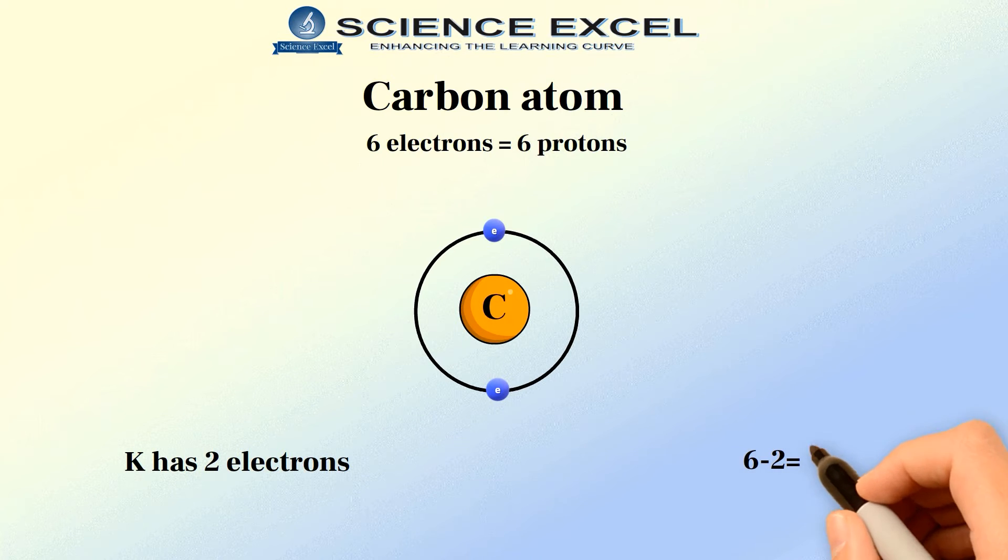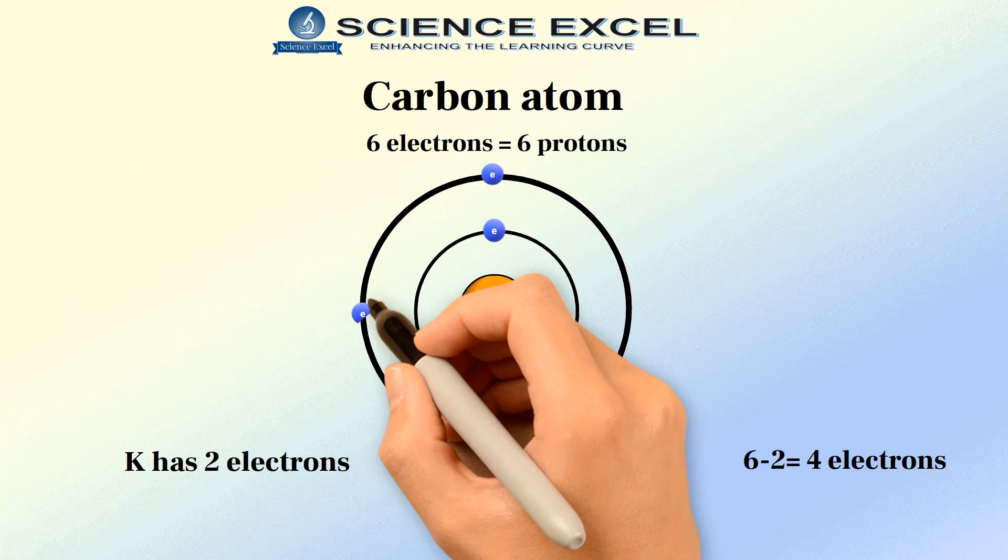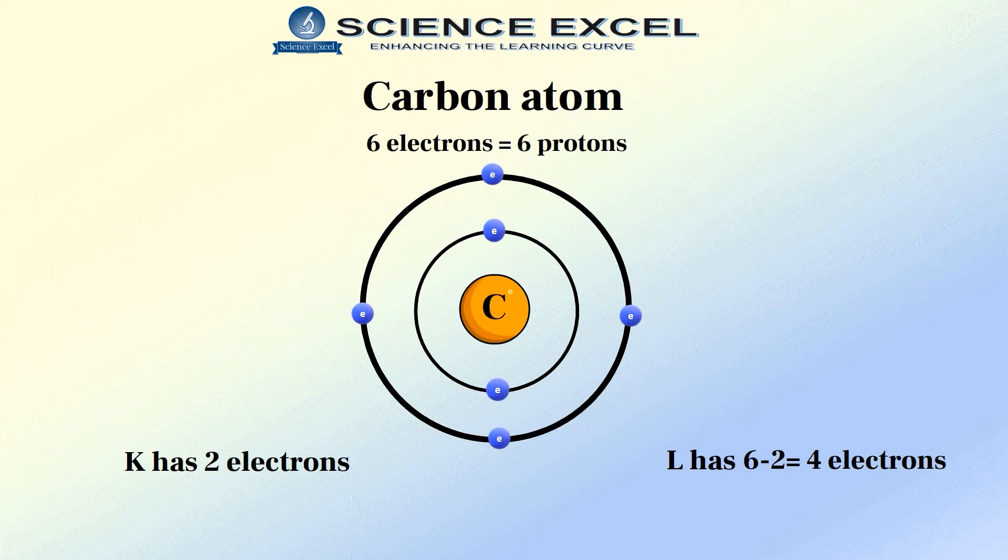Now we are left with 4 electrons. All of these 4 electrons will now go into the next shell L which can accommodate a maximum of 8 electrons. So you can see in the carbon atom all the 6 electrons have got arranged in the shells K and L.